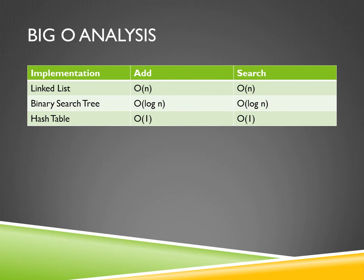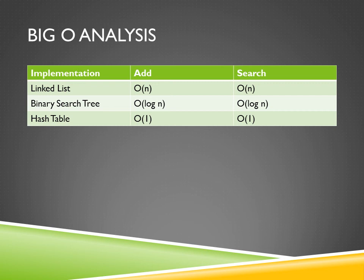Moving on to the Big O analysis — as discussed, the implementation of the dictionary can have a major effect on the average and worst cases for how long it takes the dictionary to perform an operation. For a linked list or array, the average and worst case scenarios are O(N) when adding, deleting, and finding, because the worst case requires looking through the entire list. For a binary search tree, the average case for adding and searching is O(log N), while the worst case involves searching through an unbalanced tree and having to look through all items.